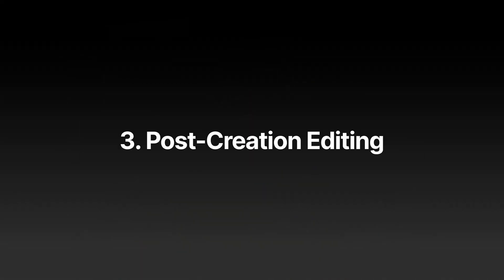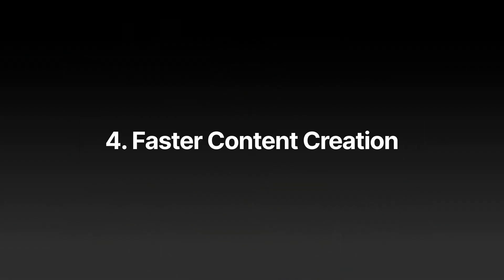Number three is post-creation editing. Before, if you got a section that kind of sucked, you couldn't really do anything with it — you just had to delete it. But now you can actually rewrite that section all within the editor in Wordplay without using extra words from your account. Number four is faster content creation. Before it would take a few minutes to create an article, but now you can literally get it within 10 to 15 seconds. It depends on how many people are using it at the time, but you can get it extremely fast — one of the cool features we've made in Wordplay 4.0.